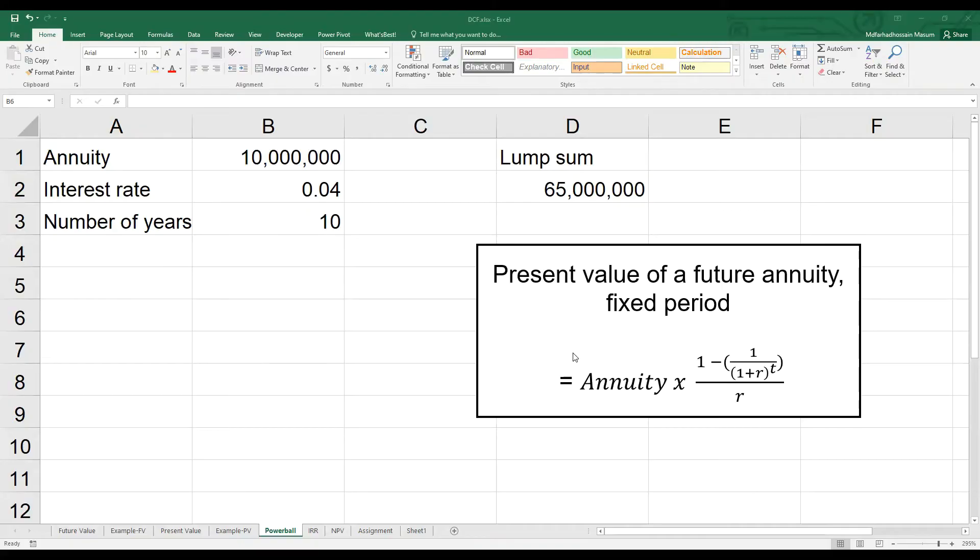If it is not perpetual, if it is only for a fixed number of years, then the equation becomes a little bit more messy. Suppose you win a lottery, $100,000,000. Now the authority told you that you can choose between two options. One, you can get $10,000,000 each year for 10 years. Or you can get a lump sum of $65,000,000 right now. Which option will you choose?